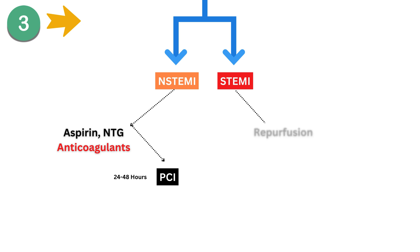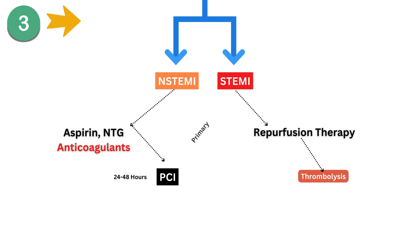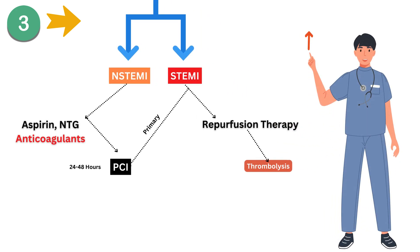For STEMI, aim for immediate reperfusion therapy. This could be through thrombolysis if the patient presents within 12 hours and PCI isn't available, or go for primary PCI if it is available at your facility. Here's a brief overview of the ACS algorithm.